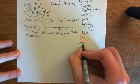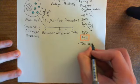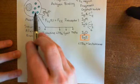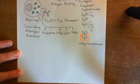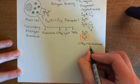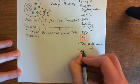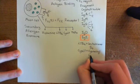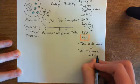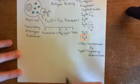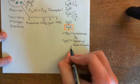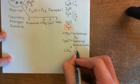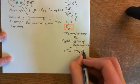LTB4 stands for leukotriene B4, a molecule derived from arachidonic acid liberated from the phospholipid bilayer when the mast cell is activated. CysLT stands for cysteinyl leukotrienes — not just one molecule but three: leukotriene C4, leukotriene D4, and leukotriene E4 are all cysteinyl leukotrienes.